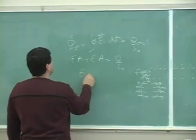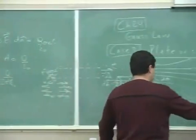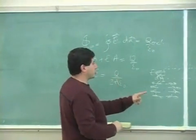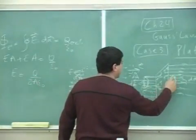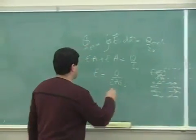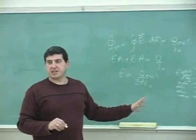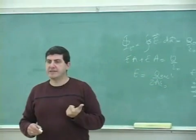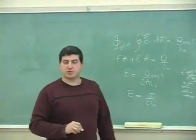From this, we get E equals Q over 2Aε₀, where Q is the charge enclosed within the bounds of that cylinder we chose — the charge on that portion of the sheet. Often this is written as sigma over 2ε₀, where Q enclosed over the area is the surface charge density sigma — how much charge is enclosed per area of the sheet.